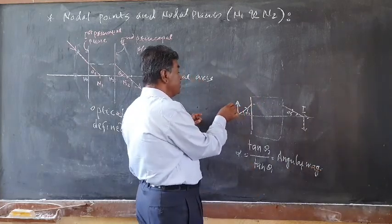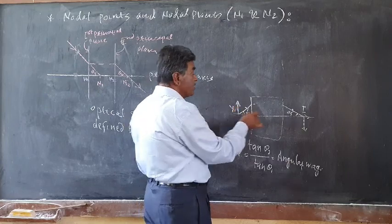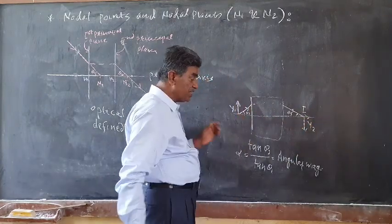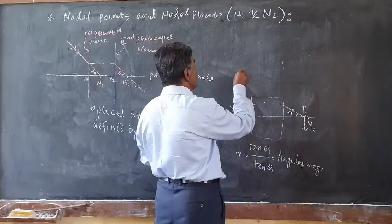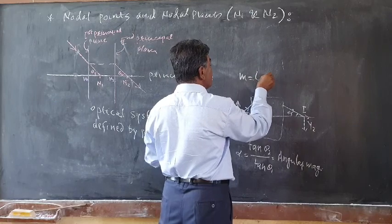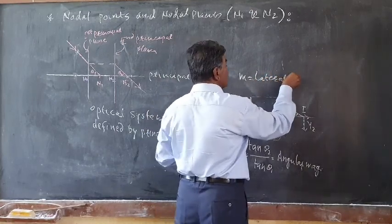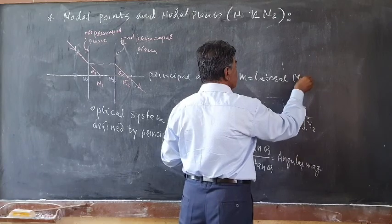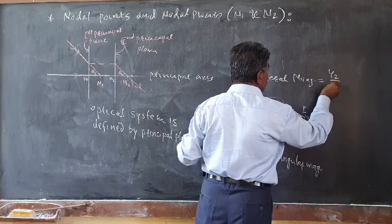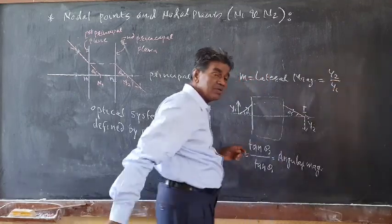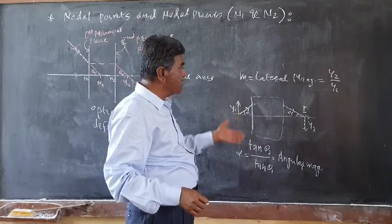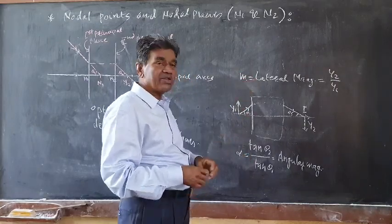If the height of the object is y1 and the height of the image is y2, this is related to the lateral magnification, denoted by m. The lateral magnification m is the ratio of height of image to height of object, that is y2 divided by y1.